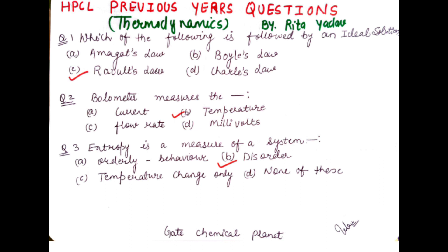The first question is: which of the following is followed by an ideal solution? As we all know, an ideal solution always follows Raoult's Law. So the correct option is C for this question.